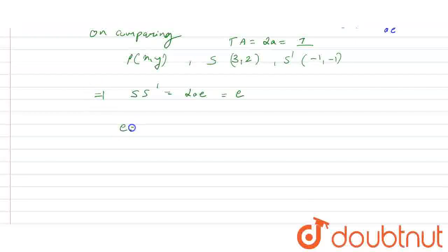Now we have the coordinates of S and S', so we can find the distance. The distance between (3, 2) and (-1, -1) is √[(3-(-1))² + (2-(-1))²] = √[4² + 3²].